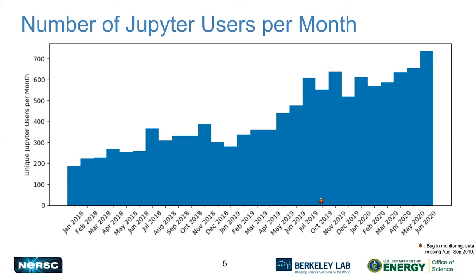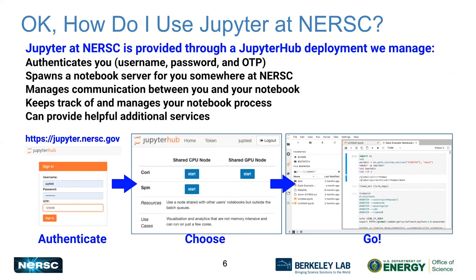How do you use Jupyter at NERSC? It's provided through a JupyterHub deployment. The hub authenticates you and starts up your notebook — this is much better than starting up a Jupyter notebook in an SSH tunnel. There are three steps: you authenticate at jupyter.nersc.gov using your one-time password with multi-factor authentication, then you choose where you want your notebook to start up, and then you click and your notebook spins up.